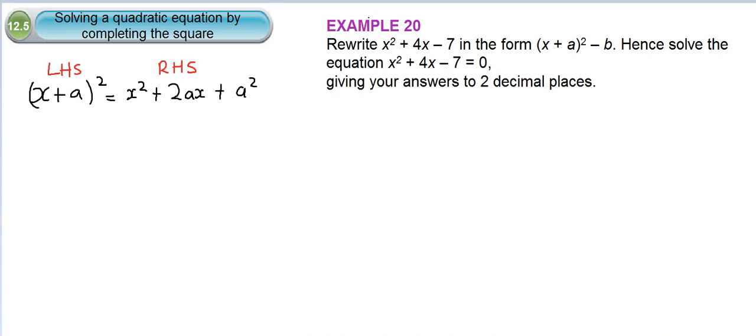So if I took minus a squared away from both sides, the expression on the left hand side becomes x plus a squared minus a squared equals x squared plus a squared plus 2ax.